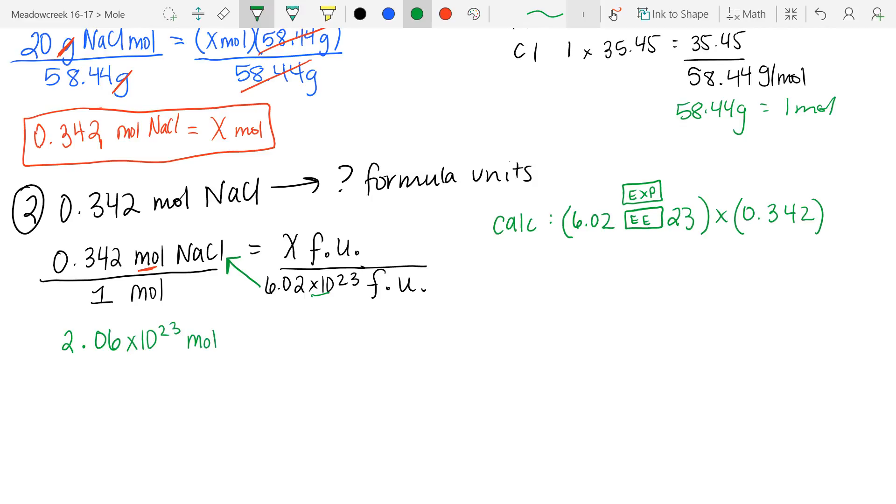6.02 EE 23 times 0.342 is going to give us an answer of 2.06 times 10 to the 23rd. And our units are going to be mol NaCl formula units. And I'm going to set it equal and multiply the other side.